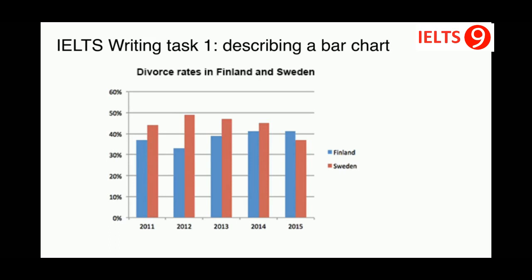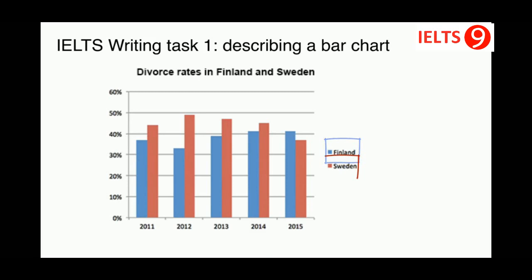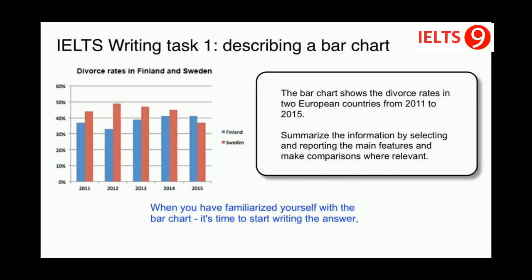Summarize the information by selecting and reporting the main features and make comparisons where relevant. Now let's look at the bar chart. The name of our chart is divorce rates in Finland and Sweden. Down the vertical axis we have the percentages and along the horizontal axis we have the years. The information is provided for two countries: Finland in blue and Sweden in red.